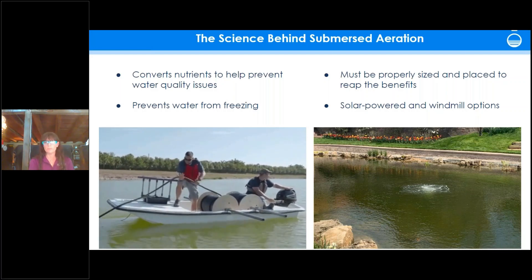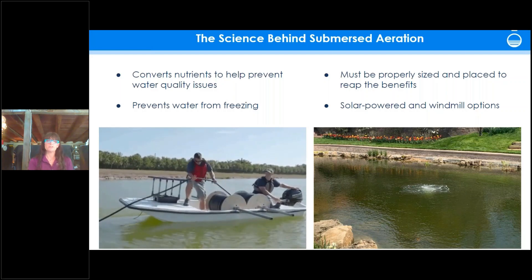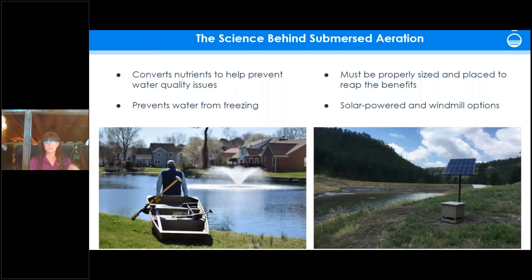Similar to fountains, it's extremely important to size and place diffusers correctly. For larger water bodies, we often recommend a bathymetric study — measuring depths and calculating water volume — so we can properly specify the correct unit. If you can't get power to the edge of your pond, solar and windmill options are available, though electrical systems are the most efficient with the highest oxygen transfer ratio.